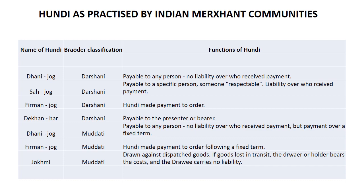In Darshani Hundi, there was no liability over who received the money. Under the broader classification, the next type is Sahajog Darshani. The function of this type of Hundi was that it was payable to a specific person.